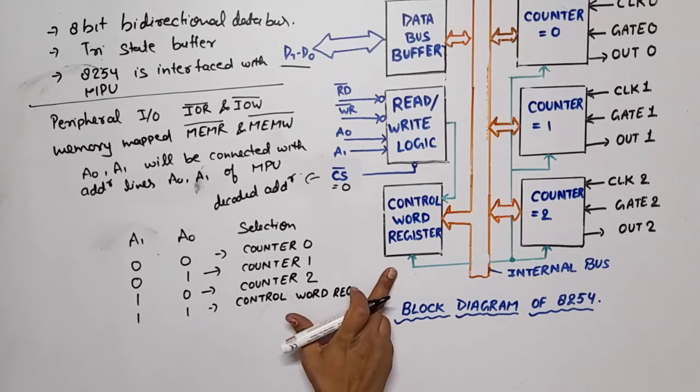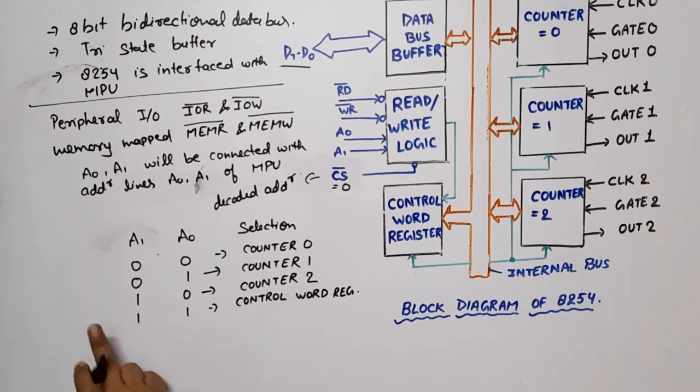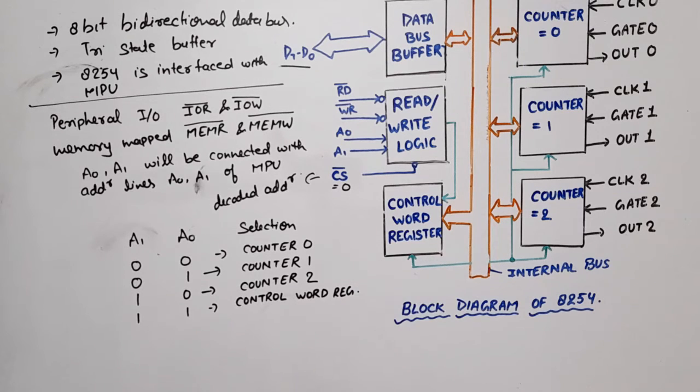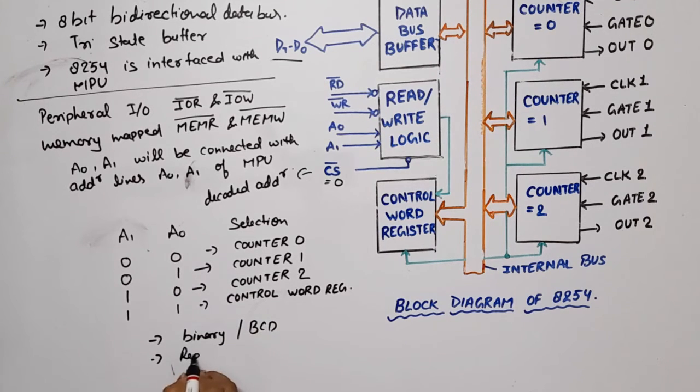Function of control word register: when select 1, 1, if A1, A0 value is 11, then control word register will be selected. Means, that we will write command word here, and that command word will decide that counter is binary counter or BCD counter, read and write operation,